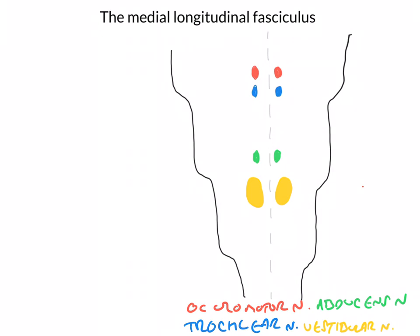Now, all of these nuclei are in fact connected together, and I'm going to give you one example of why this really needs to be the case. On the left-hand side, I'm going to draw a diagram of the eyes — a top-down view, as if we'd done a transverse section through the head looking down into the orbits.